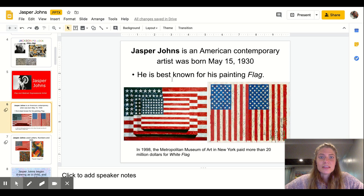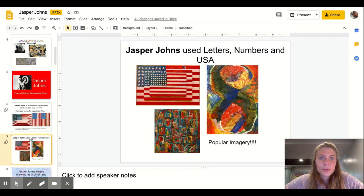Jasper Johns was born in the 1930s and he is best known for his flag paintings. Here's an interesting fact: in 1980 to 1998 at the Metropolitan Museum of Art in New York they paid more than 20 million dollars for a painting called White Flag. He likes American themed things like flags. He also likes letters, numbers, and USA. Those are all common themes that he uses through his art.